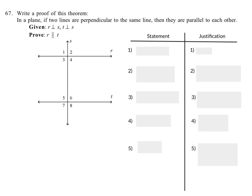Okay, we're writing a proof for this theorem: in a plane, if two lines are perpendicular to the same line, they're parallel to each other. So these two lines right here are perpendicular. It's given to us that r is perpendicular to s, and t is also perpendicular to s. I've written that there as a first step.